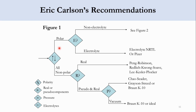If the system is polar, we check whether it is electrolytic or non-electrolytic. For an electrolytic system we select Electrolyte NRTL or Pitzer. For a non-electrolyte system we proceed to check further criteria shown in the next part of the diagram.